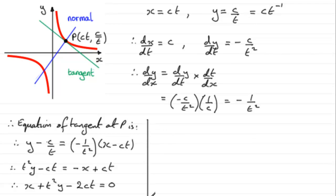Well, we need to look at the normal now. So we need to get the gradient of the normal, and that would be the negative reciprocal of this general gradient. And so that would be t squared. So we've got the gradient of the normal. And that's going to be equal to t squared.